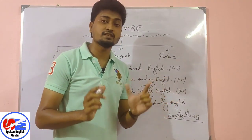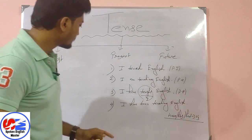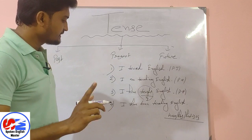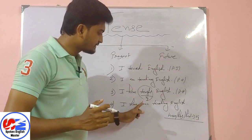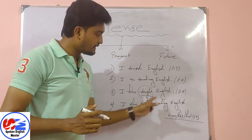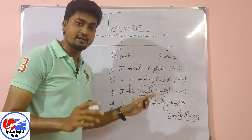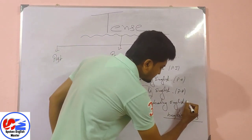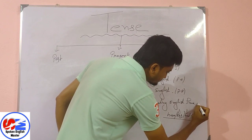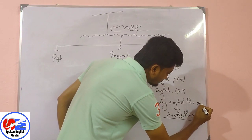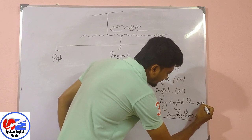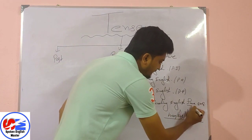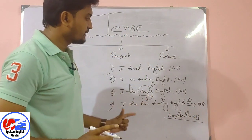Example four is present perfect continuous tense. The sentence is 'I have been teaching English.' Now, this sentence looks complete, but something needs to be added. I am now writing the full sentence: 'I have been teaching English since 2008.'